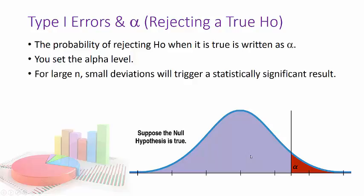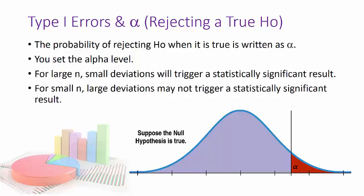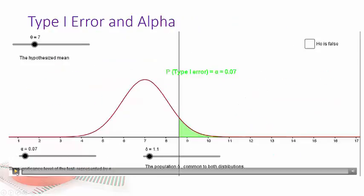Secondly if you have a large n, a large sample size, small deviations, what happens is this curve will tighten up and even if you have a small deviation which you don't consider truly significant it can still trigger a statistically significant result. Now if you have a small n you might have large deviations and the reason they won't trigger a statistically significant result is it's going to increase the spread and push alpha away.